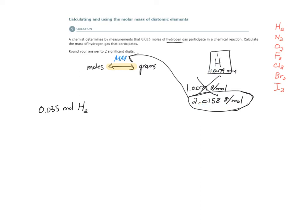So now that we have the correct molar mass, let's place it here as a conversion factor. One mole of H2 is 2.0158 grams of H2. Moles of H2 cancels. We're left with grams.